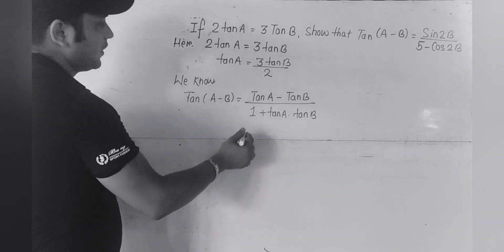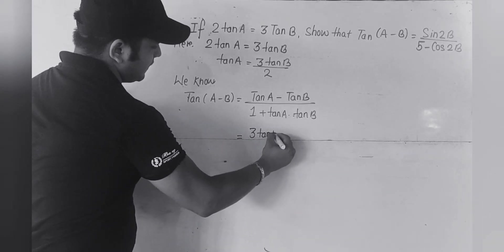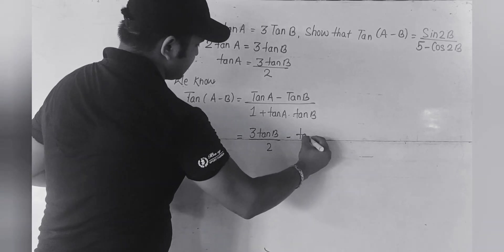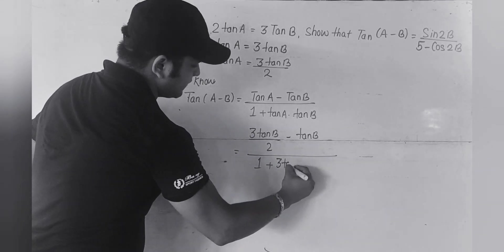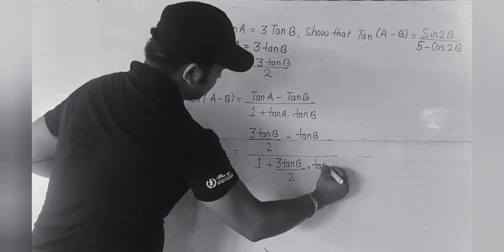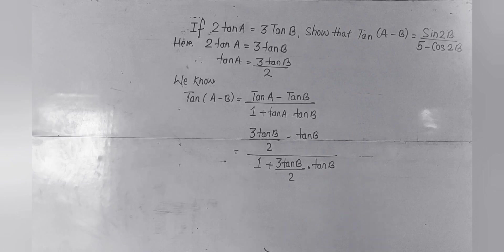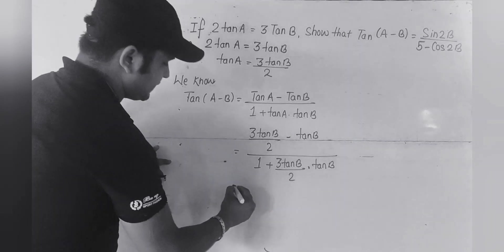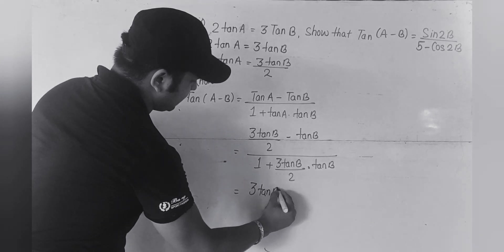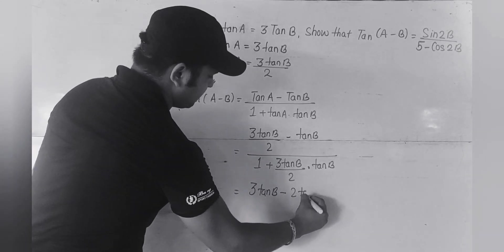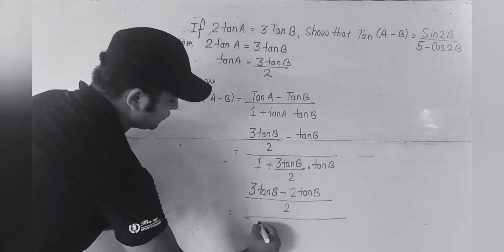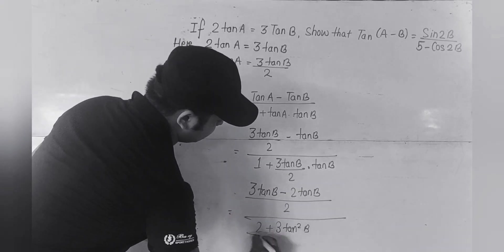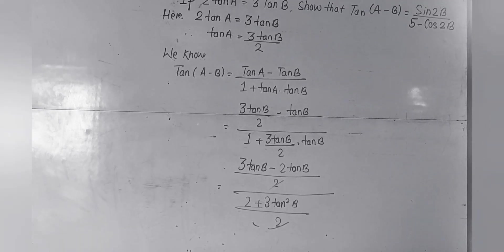Now we are going to substitute the value of tanA. So we have (3tanB/2 - tanB) / (1 + 3tanB/2 · tanB). Simplifying the numerator: 3tanB - 2tanB over 2, which gives tanB/2. And the denominator: (2 + 3tan²B) / 2.